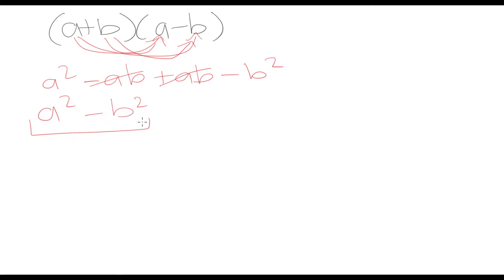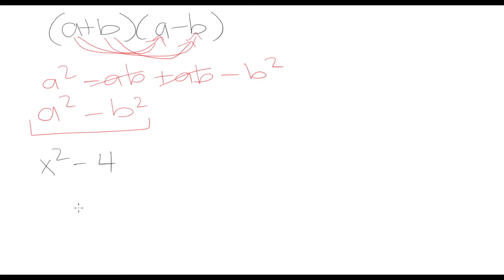If we come across an expression like x squared minus 4 and we're asked to factor it, we can recognize that we have a difference of two squares. x squared is a perfect square because x times x is x squared, and 4 is a perfect square because 2 times 2 is equal to 4.